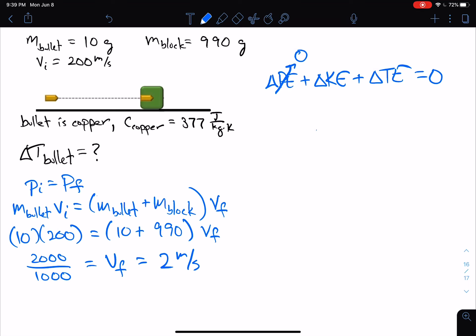We know that we do have a change in kinetic energy, and we know some thermal energy is generated. So I can say ΔTE is going to equal the negative change in kinetic energy. The thermal energy generated is going into heating up the bullet. So that's going to be just the mass of the bullet. The bullet is copper, so I need the specific heat of copper, and of course, the temperature change for the bullet.